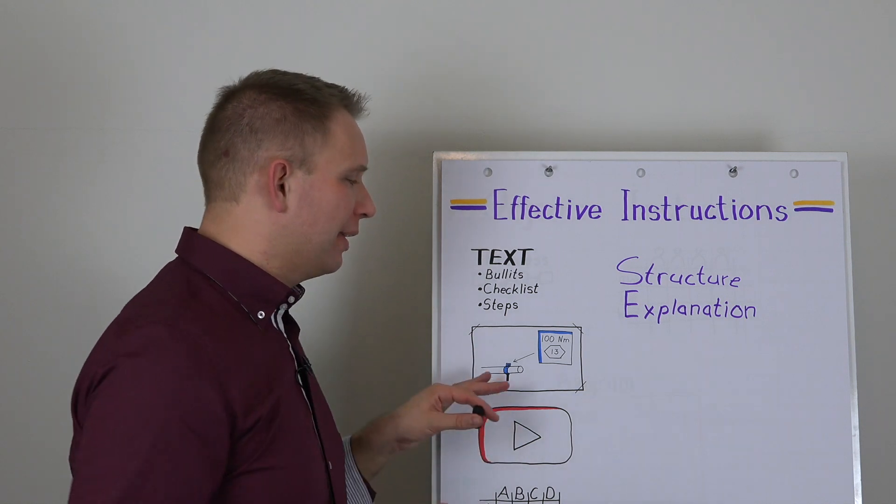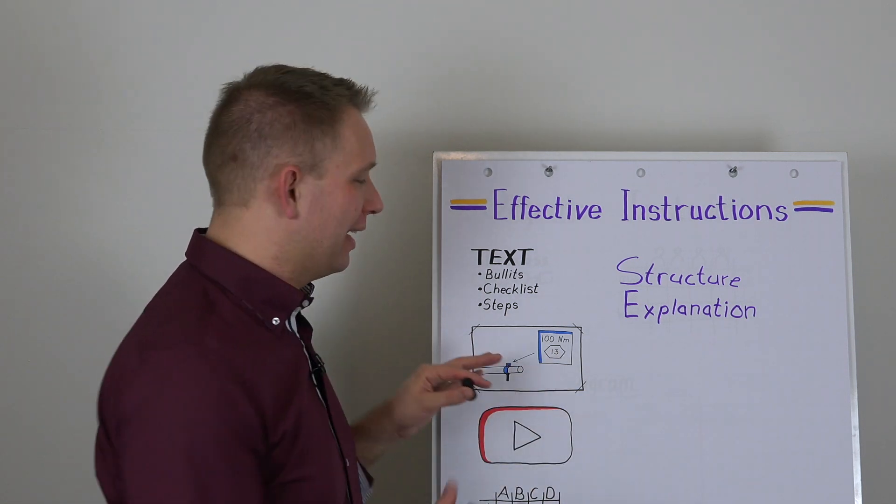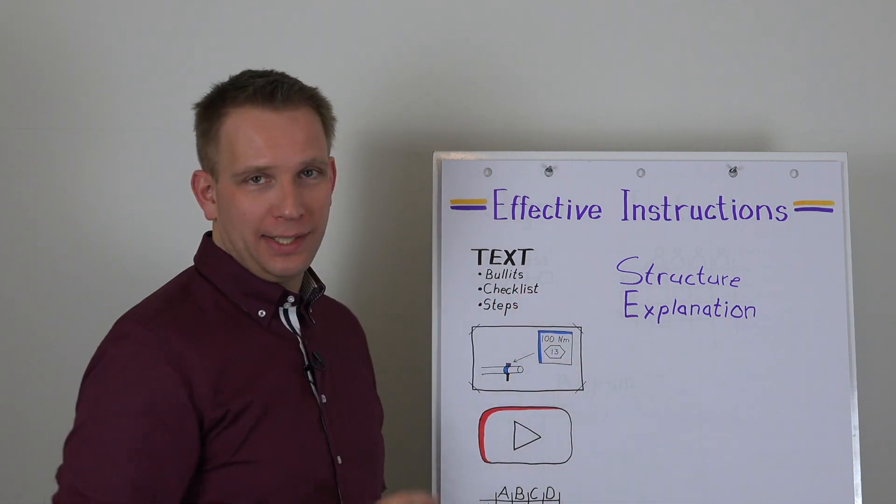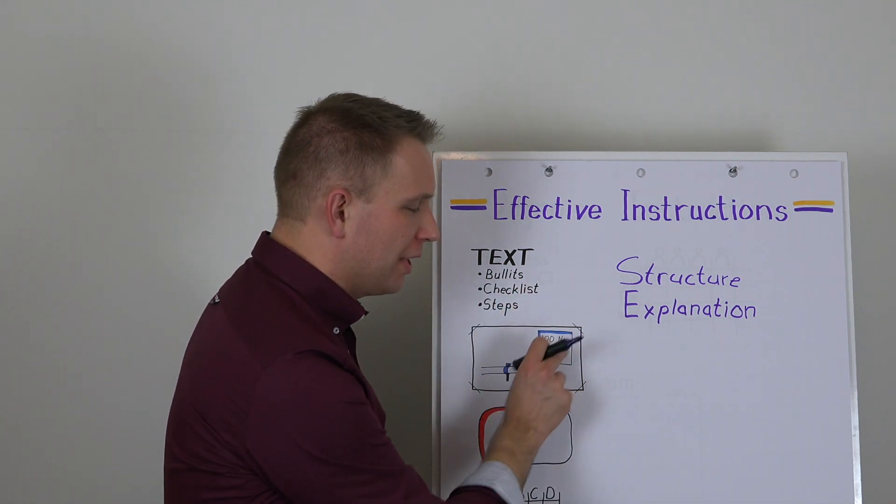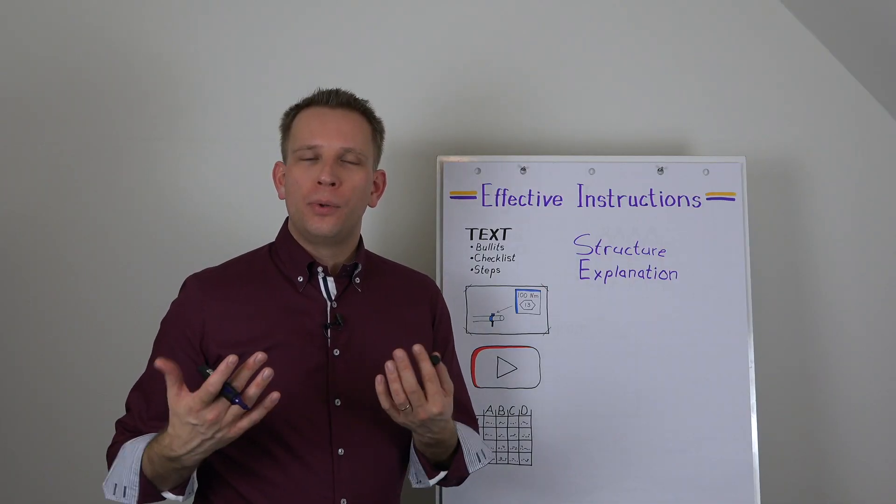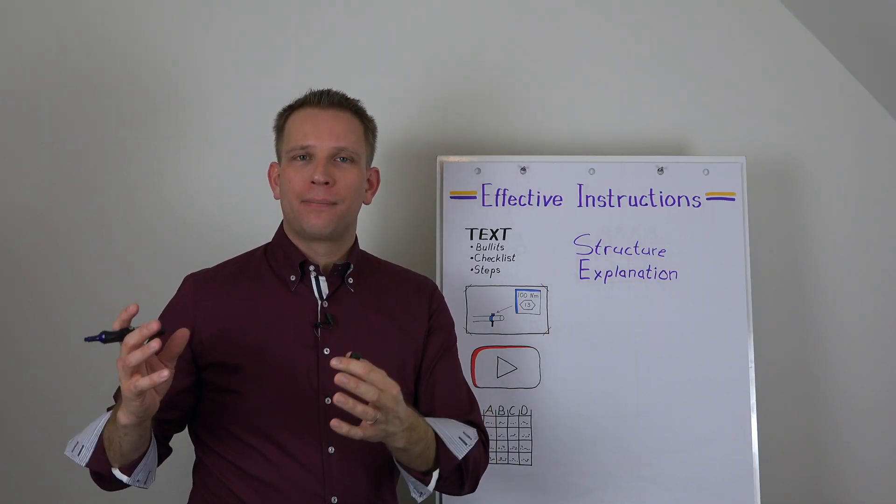Because even, you can already see it a bit in the picture I drew. I drew a minimal text type of picture, but still also here, there is a little bit of numbers and text. What we do is we always explain the visuals.